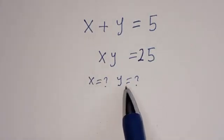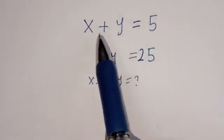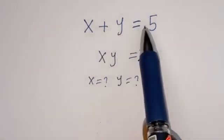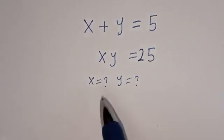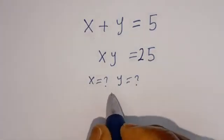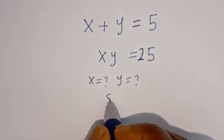Hello. How to solve for x and y in this equation: x plus y is equal to 5, and x times y is equal to 25. Solution.